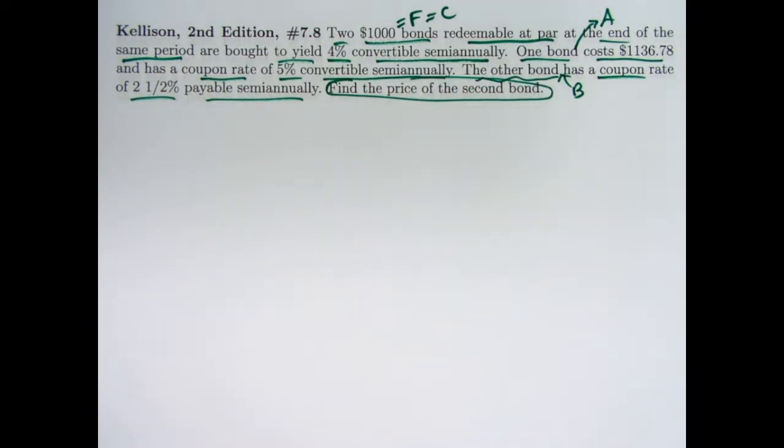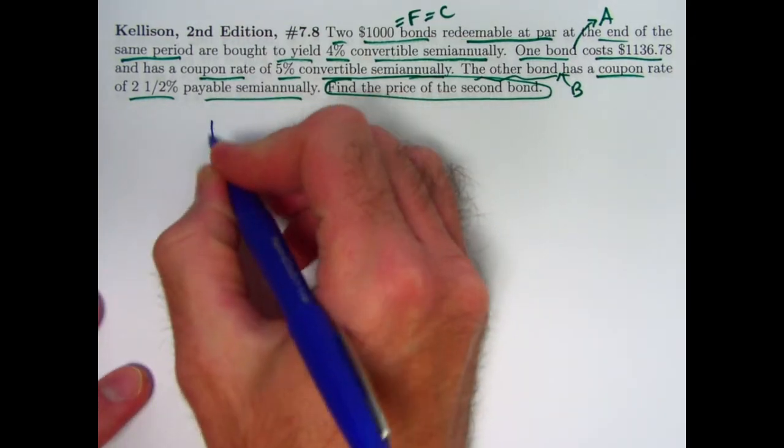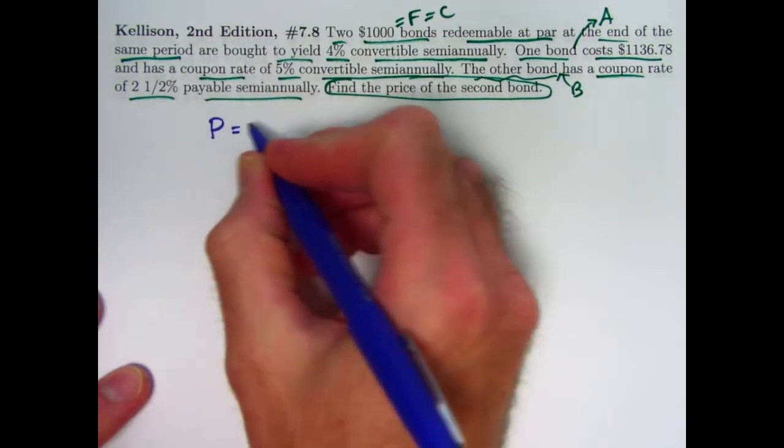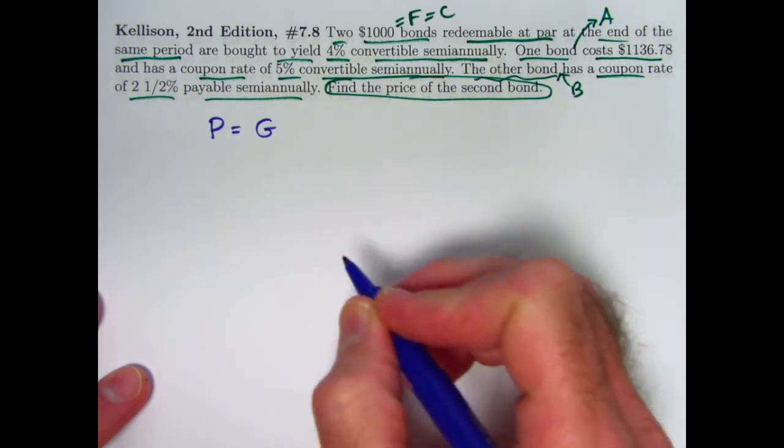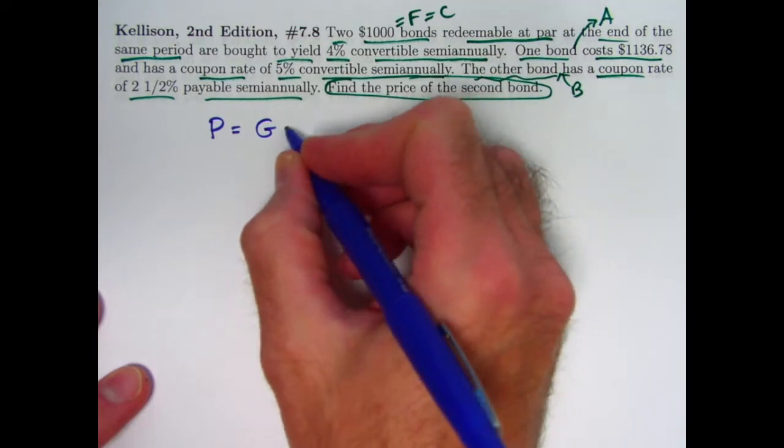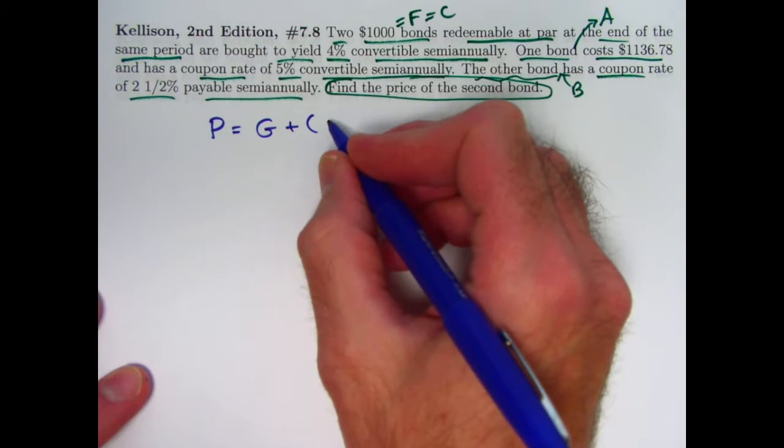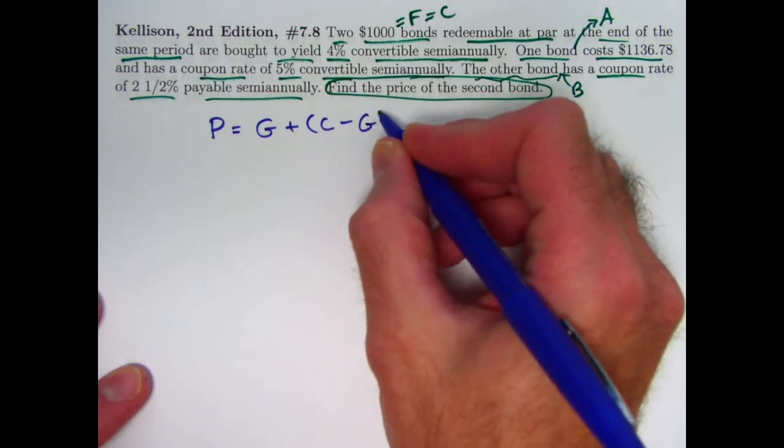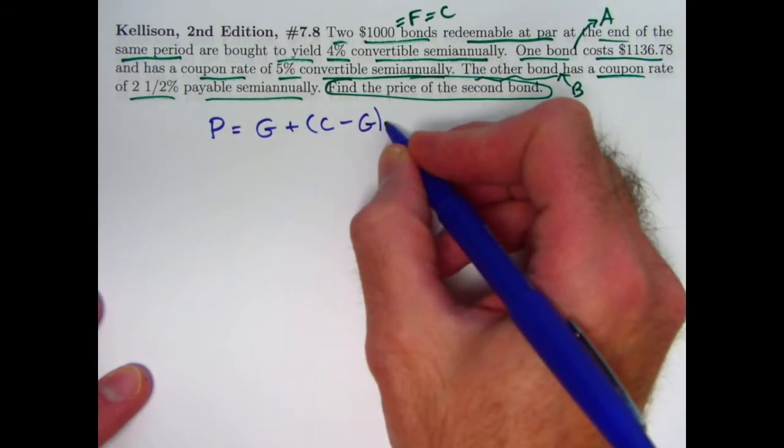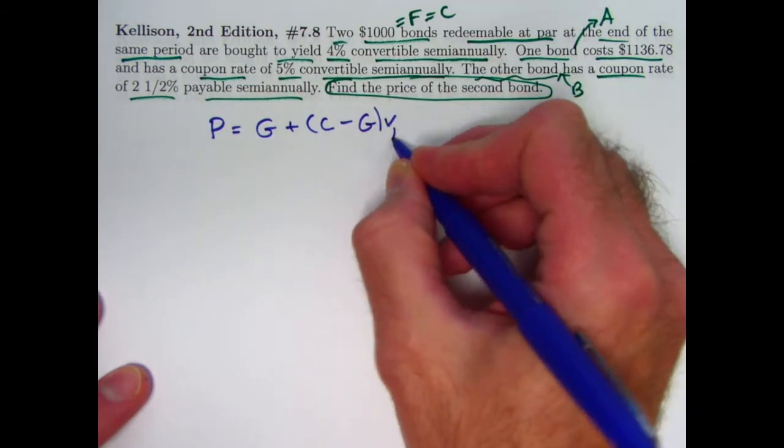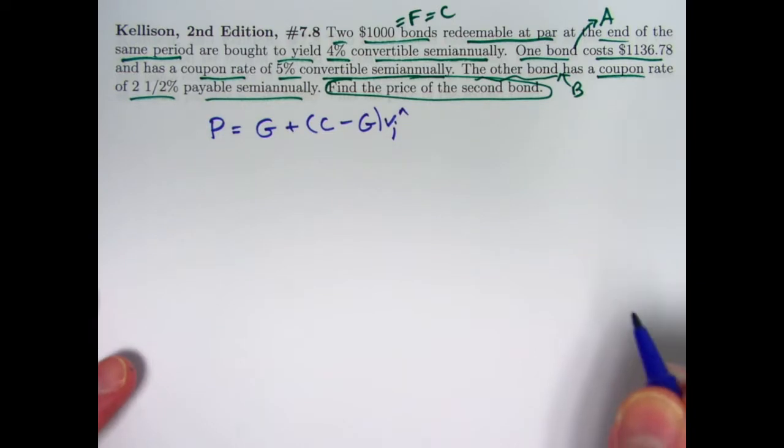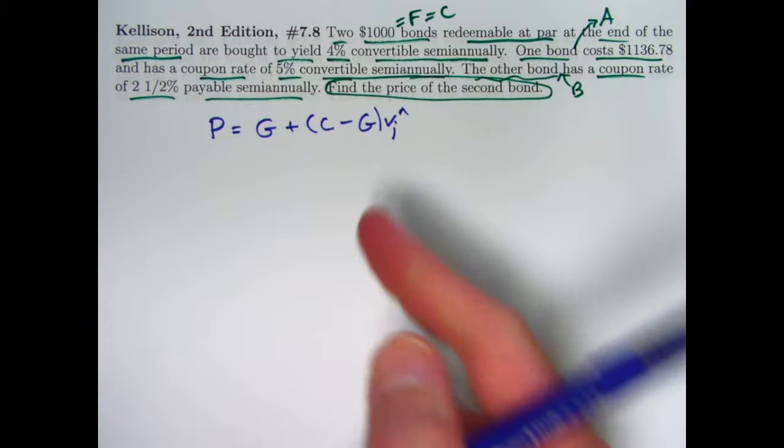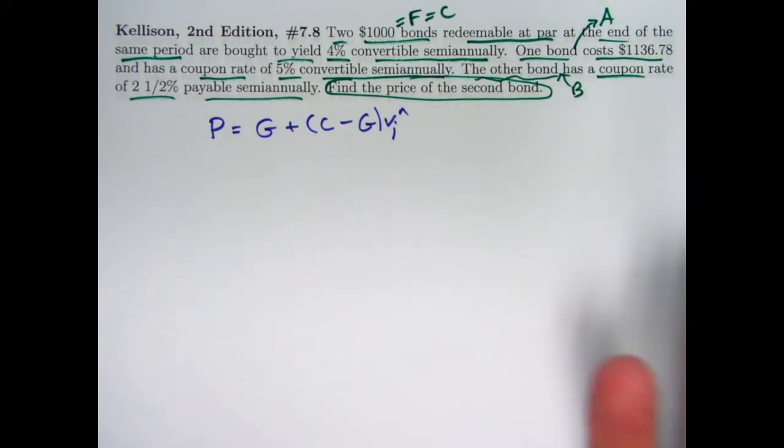What was the base amount formula? For the price, the price was equal to capital G, called the base amount, which I'll define in a minute here, plus the difference of the redemption amount C and the base amount capital G, times the discount factor V_J raised to the nth power. We are going to need to solve this equation for n, and this is fairly easy to do because you don't see any a_n's in here. We will need to use logarithms, though.